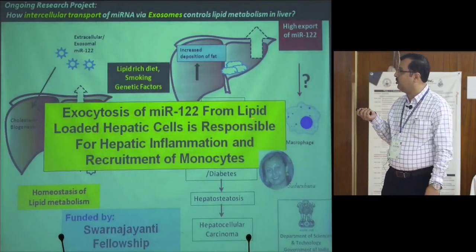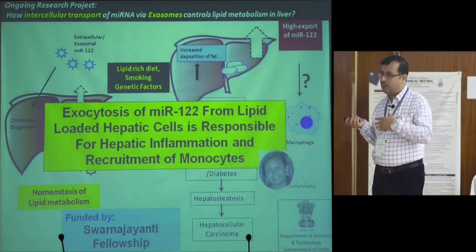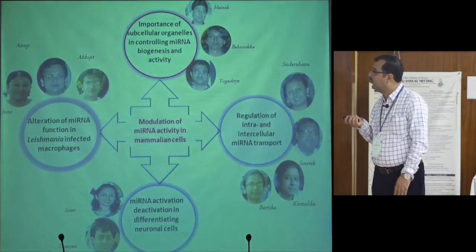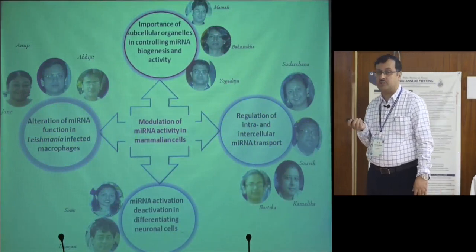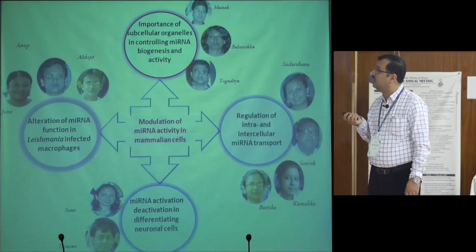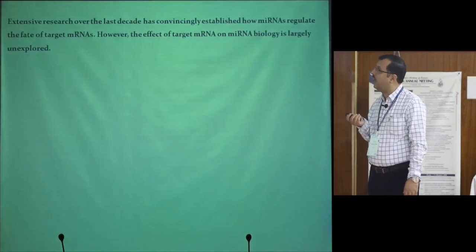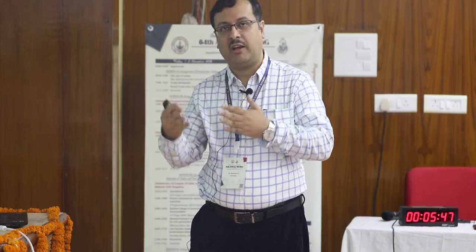Exocytosis of miR-122 from lipid-loaded hepatic cells is responsible for hepatic inflammation and recruitment of monocytes — we are working on this manuscript with high hopes for publication in a better journal. Now switching to the importance of organelles in controlling microRNA expression: extensive research has been done on how microRNA regulates messenger RNA, but it has never been explored how the abundance of target mRNA can influence microRNA content or activity.